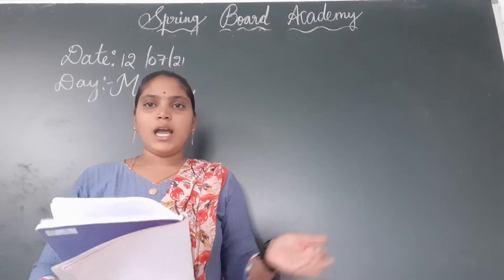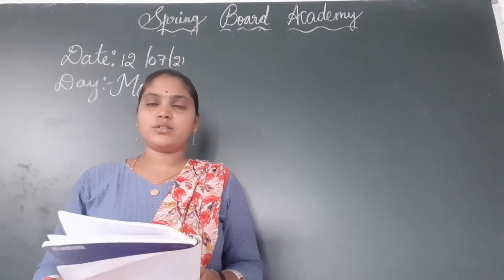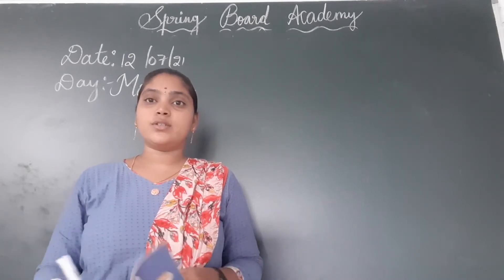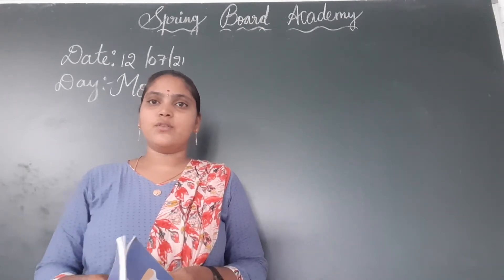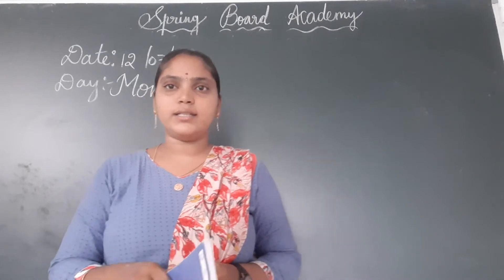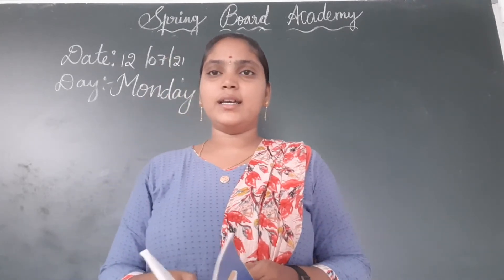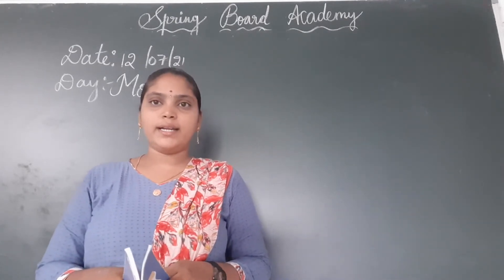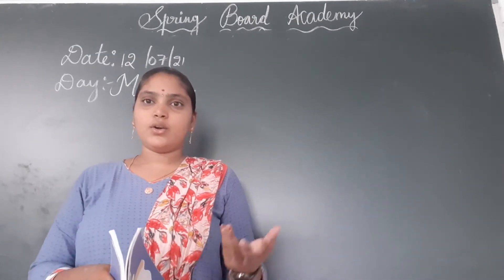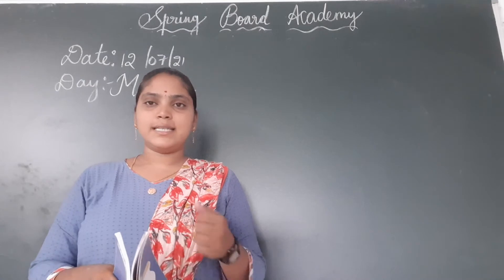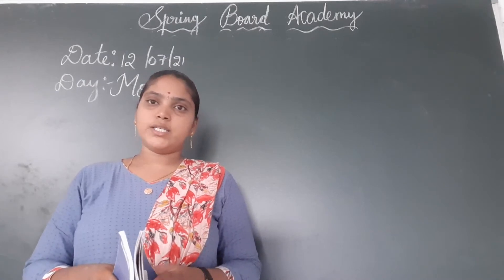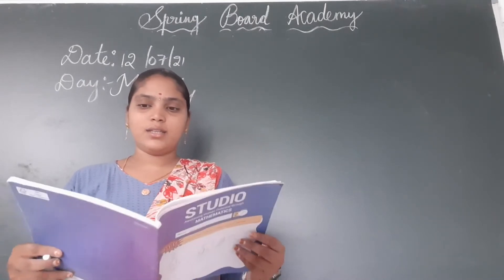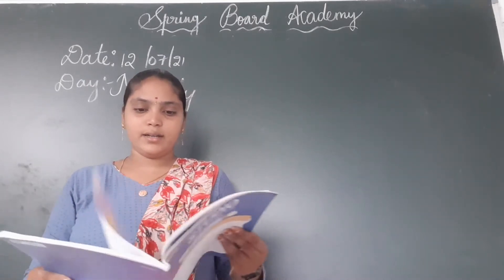And coming to the shapes, we learnt about solid shapes. What are the solid shapes we have learnt? Cube, cuboid, cone, cylinder, sphere. Yes children, we have learnt these 6 solid shapes.